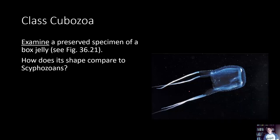Finally, class Cubozoa — the box jellies. Their medusa is box-shaped with four corners, and from each corner extends a collection of tentacles. They are described as good swimmers and voracious predators with stinging cnidocytes. A species off the coast of Australia has extremely potent venom in its nematocysts — a very small amount could be lethal to many people. Know class Cubozoa and be able to recognize it by image.